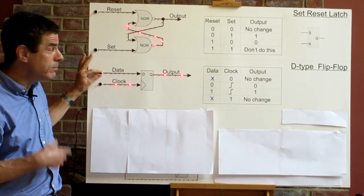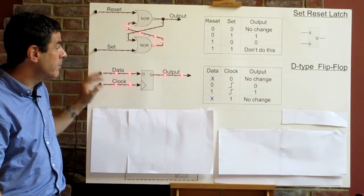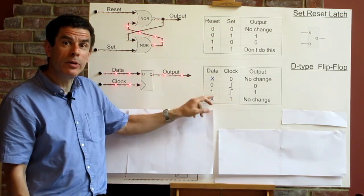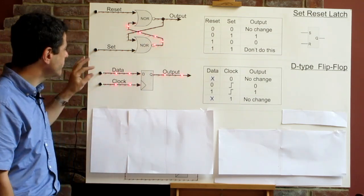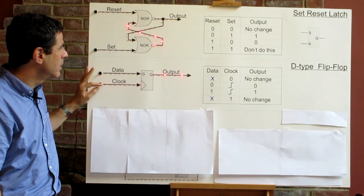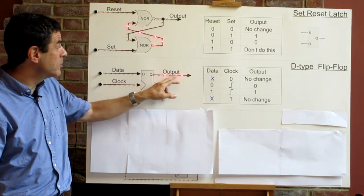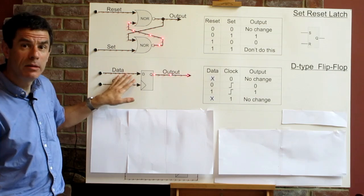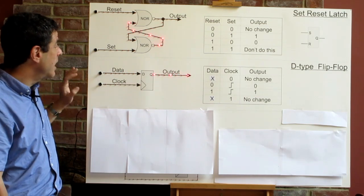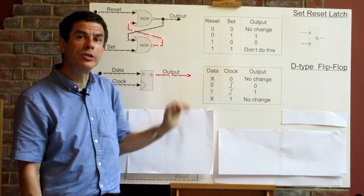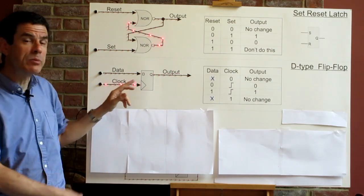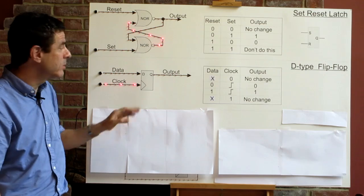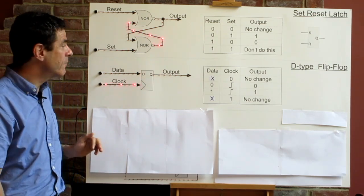We can change the data now because we don't care when the clock's high. We don't care what the data is. We only cared at the moment of transition. So if I want to take the output low, I need to have the data input as low, and then do another low to high transition on the clock. The flip-flop takes another snapshot of the data input and sets the output to that value.